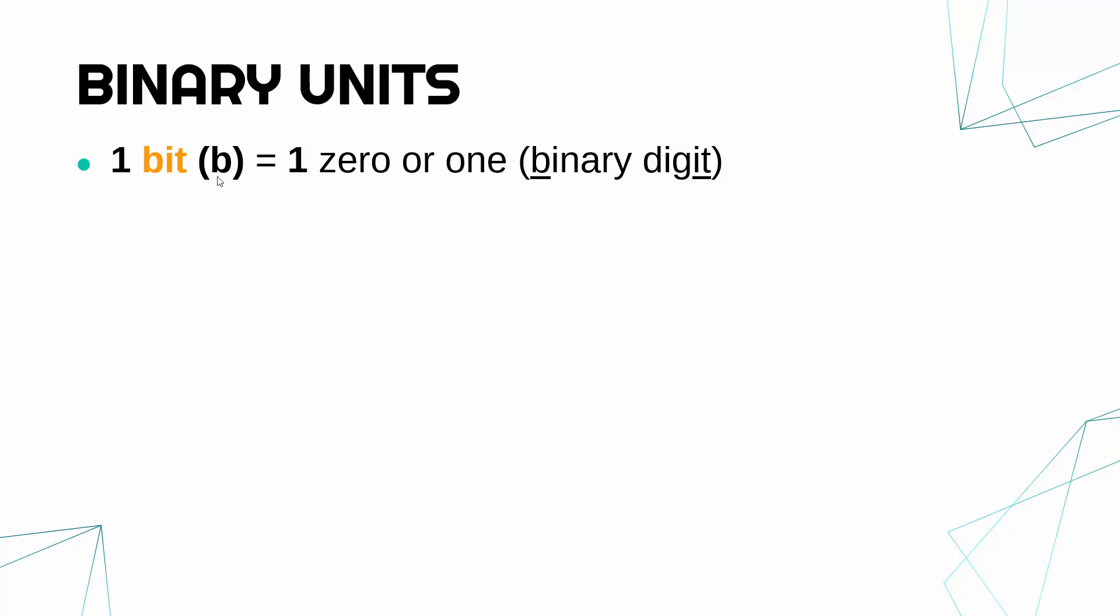The next unit up is a nibble. One nibble is four bits. There isn't a shorthand for nibble—there is no lowercase n. Nibbles are only really used because you can convert nibbles really easily to hexadecimal.